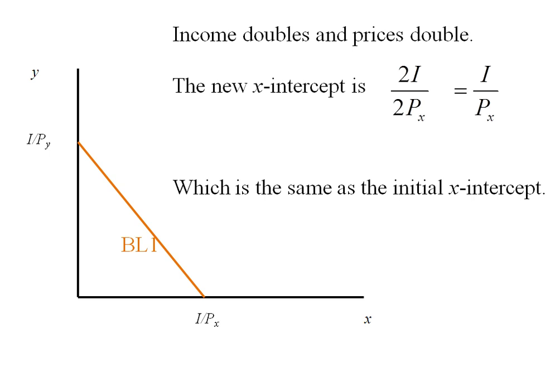Well if my X-intercept doesn't change and my Y-intercept doesn't change, then my budget line isn't going to change. I'm just going to label BL2 equal to BL1.